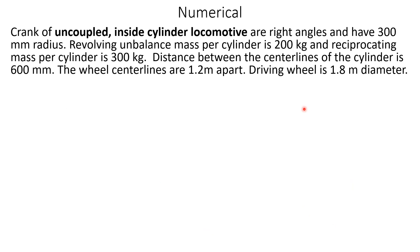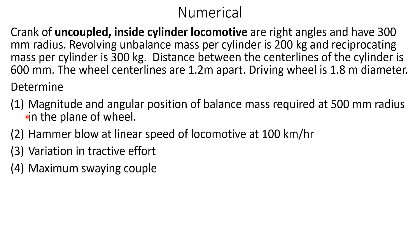Net pressure between the wheel and rail is W ± m_b × r_b × ω² — Equation 11. Now we will solve a numerical problem. Cranks of an uncoupled inside-cylinder locomotive are at right angles with 300 mm radius. Revolving unbalanced mass per cylinder is 200 kg; reciprocating mass per cylinder is 300 kg. Distance between cylinder center lines is 600 mm; wheel center lines are 1.2 m apart; driving wheel diameter is 1.8 m.